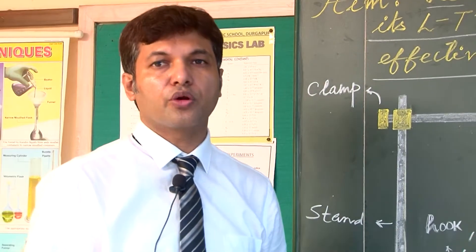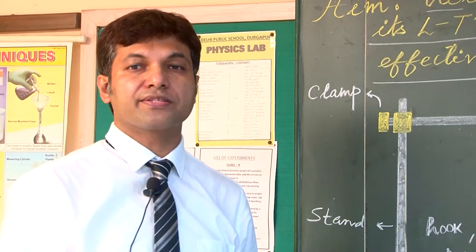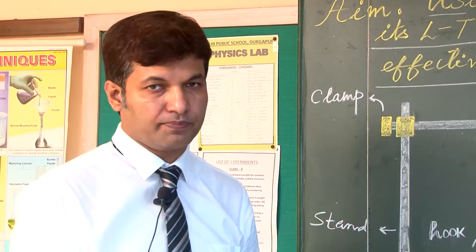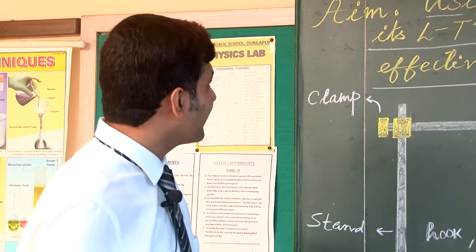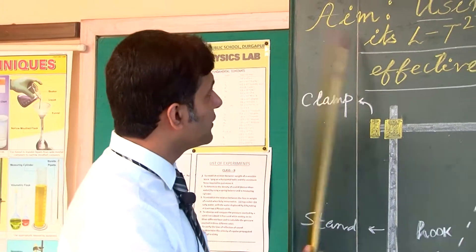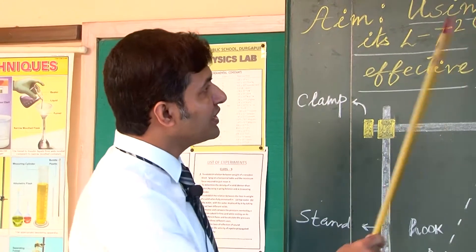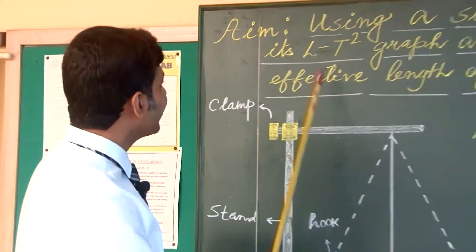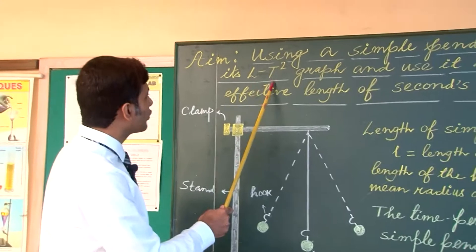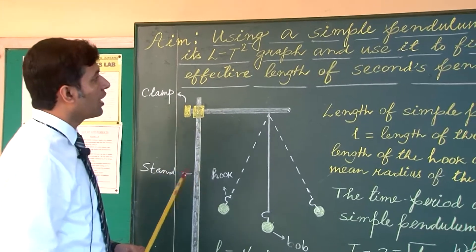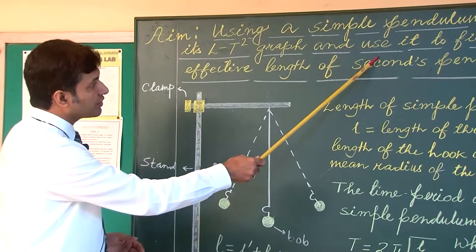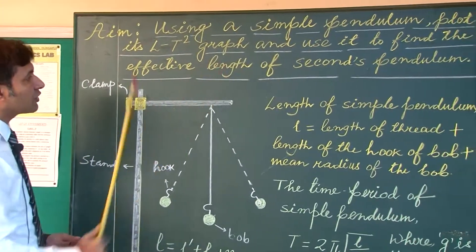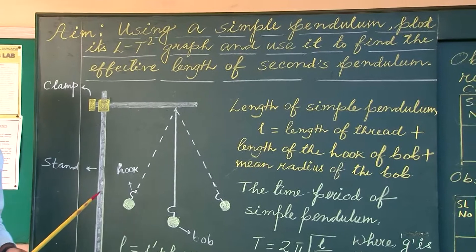Dear students, today we are going to perform an experiment which is based on simple pendulum. The aim of this experiment is: using a simple pendulum, plot its L versus T square graph and to use it to find the effective length of seconds pendulum.